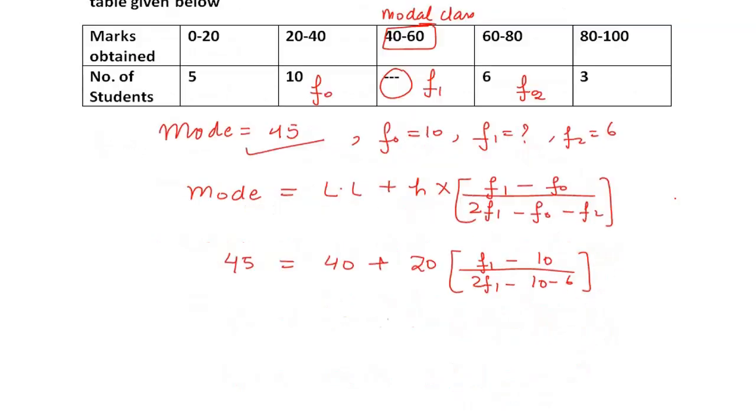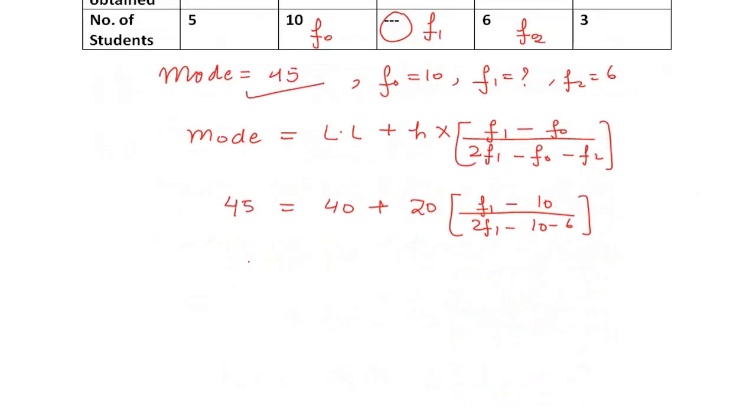So yes, putting all the values will get F1 in this case. So you have 45 on left side. Take 40 to the other side, it will be minus 40. 45 minus 40 is equal to 20 in bracket, F1 minus 10 divided by 2F1 minus 16. It will be, now we will find F1. So left side 5 ho jae ga, it is 20 on the right.